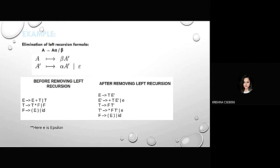Thank you, Arupang. Now, the examples. Elimination of left recursion formula is: A extends to A alpha slash beta becomes A extends to beta A dash, A dash extends to alpha A dash slash epsilon. Before removing left recursion, E extends to E plus T slash T, T extends to T star F slash F, F extends to open bracket E closing bracket slash id.